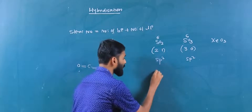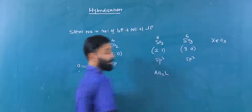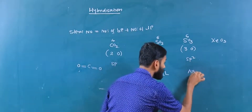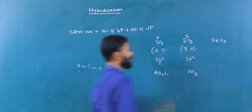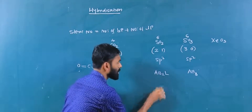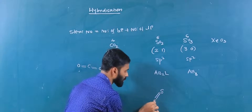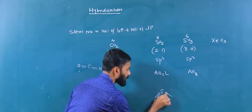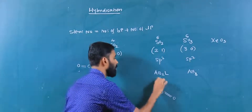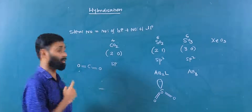Sulfur dioxide has a molecular type of AB2L. Its structure has two oxygen bonds — one single bond and one double bond. The VSEPR model classifies sulfur dioxide as an AB2L molecule with two bond pairs and one lone pair.